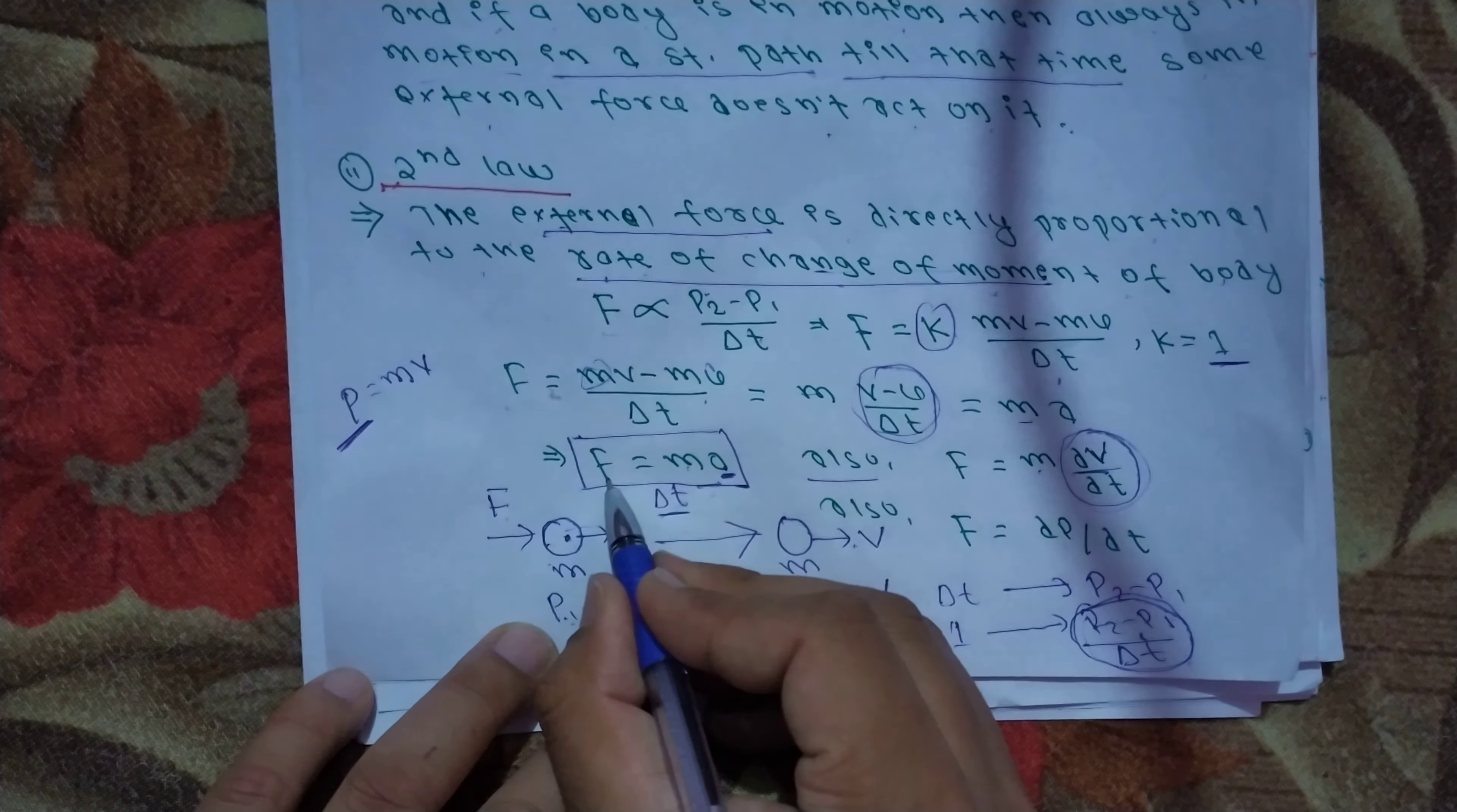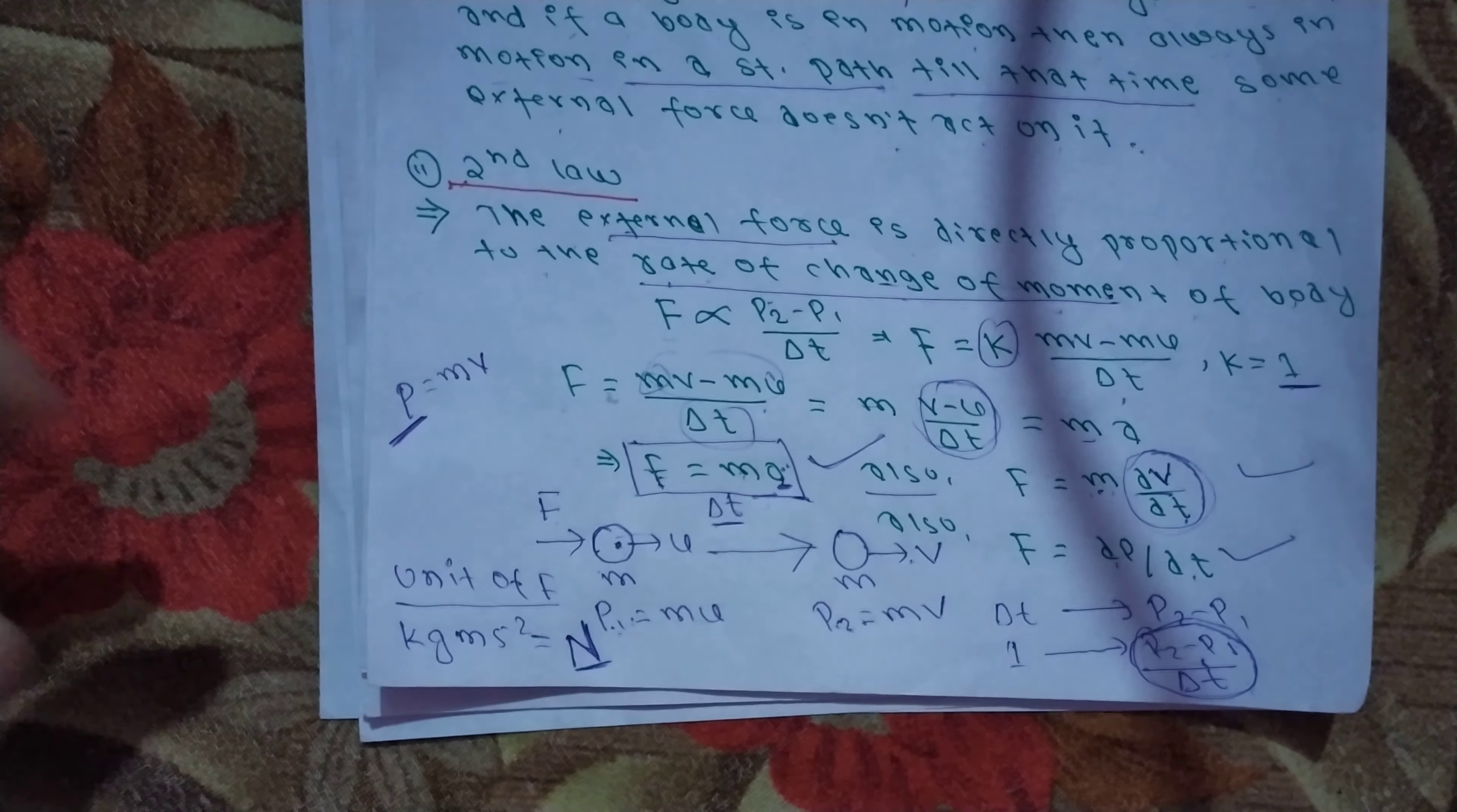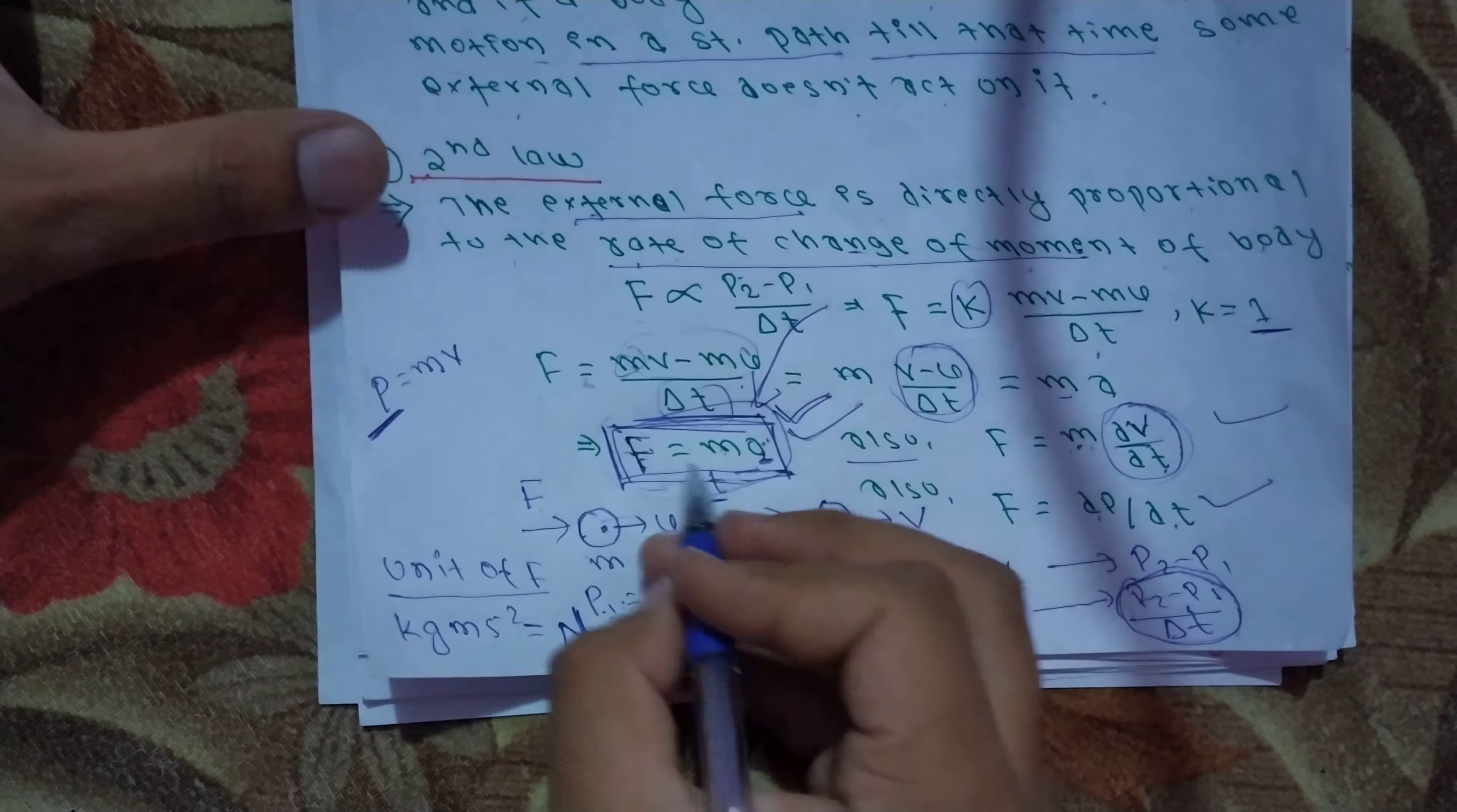The unit of force F is kg meter per second squared, which is called a Newton. This force definition is a universal truth. There's also the Galileo force unit.